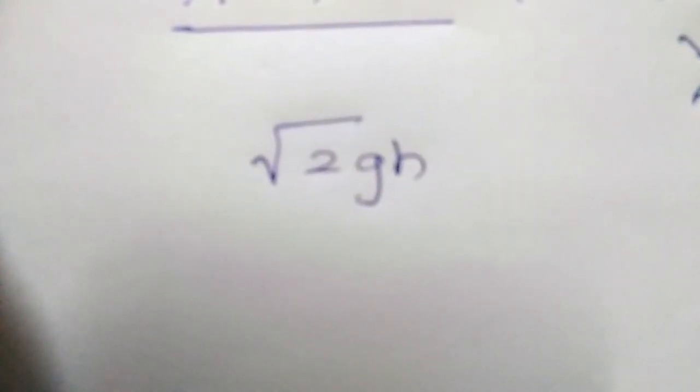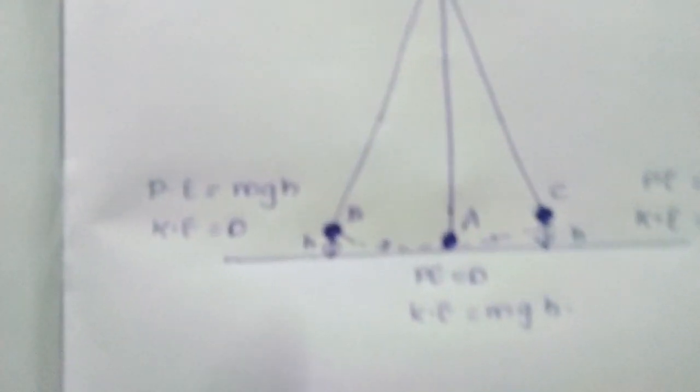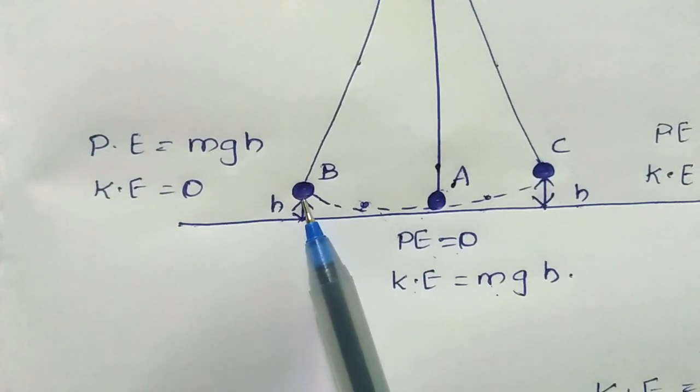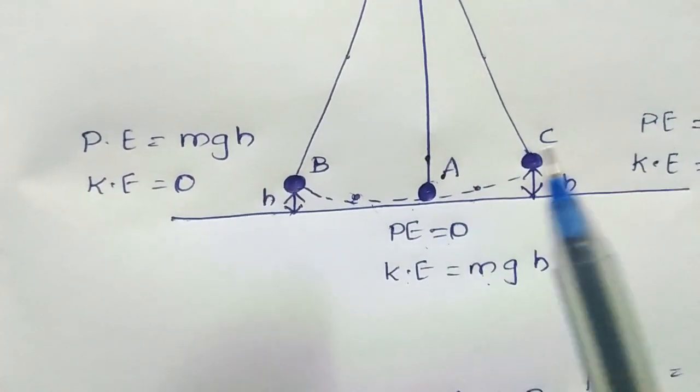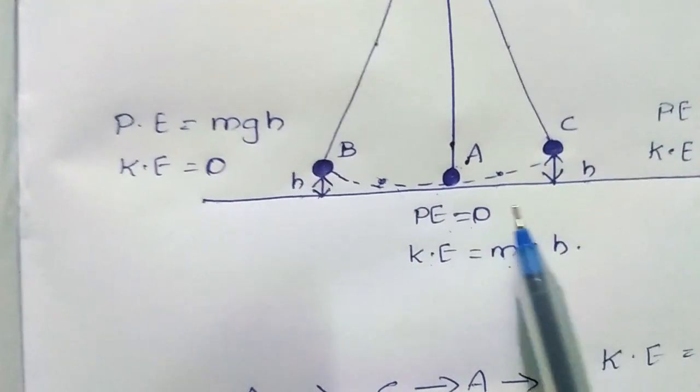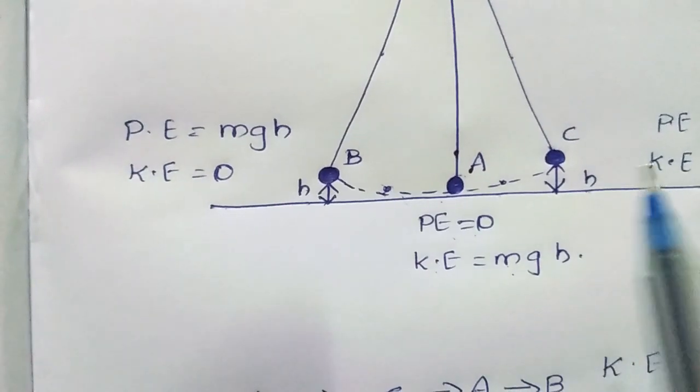Acquiring a velocity of root 2gh, the bob moves from A to B. The bob moves from A to B since it has the velocity of root 2gh.